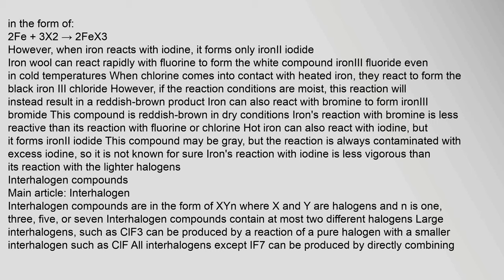When chlorine comes into contact with heated iron, they react to form the black iron(III) chloride. However, if the reaction conditions are moist, this reaction will instead result in a reddish-brown product. Iron can also react with bromine to form iron bromide. This compound is reddish-brown in dry conditions. Iron's reaction with bromine is less reactive than its reaction with fluorine or chlorine. Hot iron can also react with iodine, forming iron(II) iodide. This compound may be gray, but the reaction is always contaminated with excess iodine. Iron's reaction with iodine is less vigorous than its reaction with the lighter halogens.